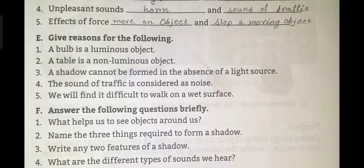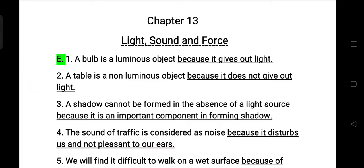Give reason for the following. First question: a bulb is a luminous object because it gives out light, so a bulb is a luminous object. A table is a non-luminous object because it does not give out light.